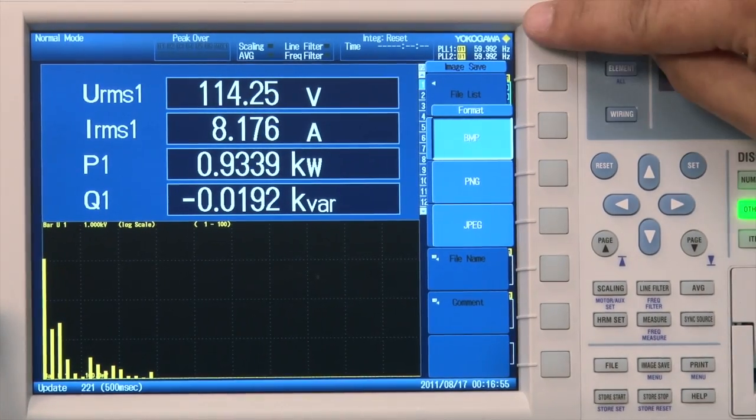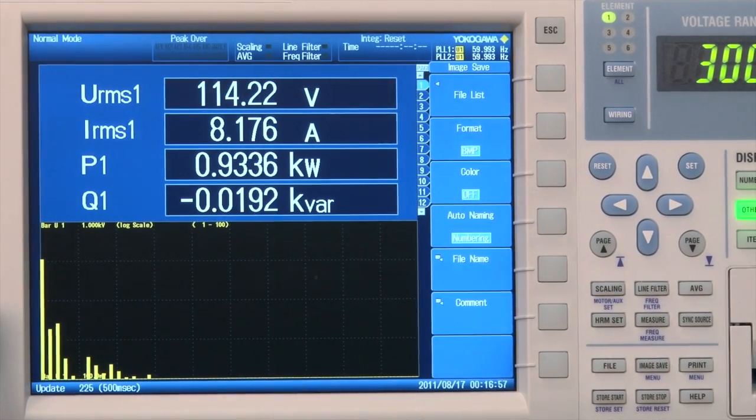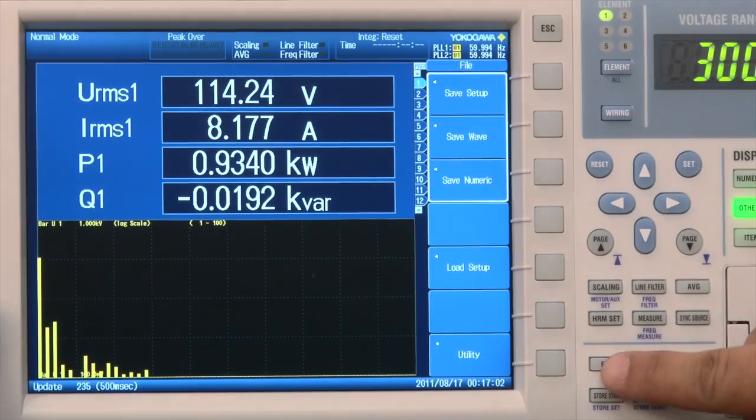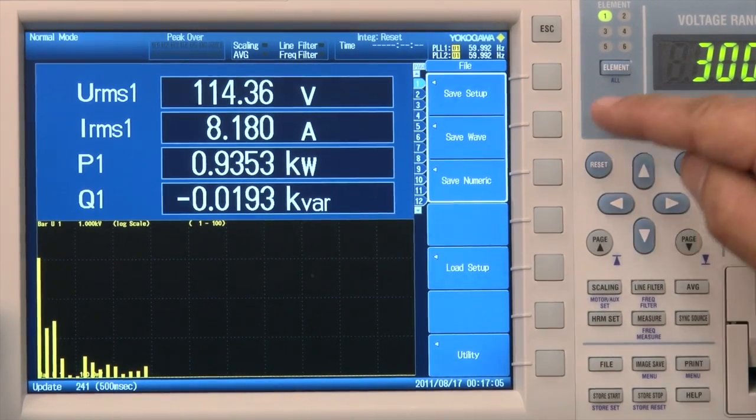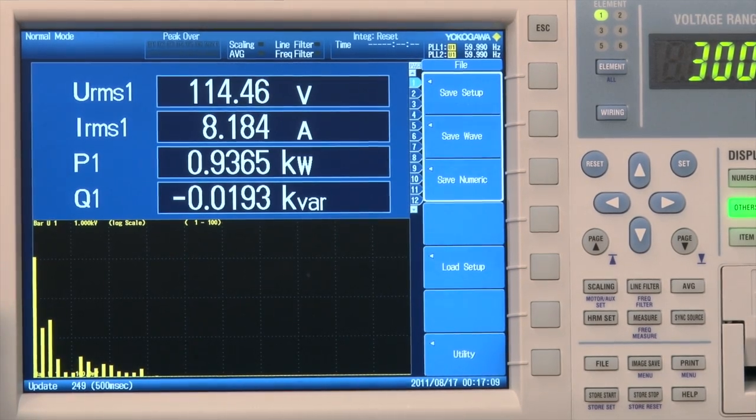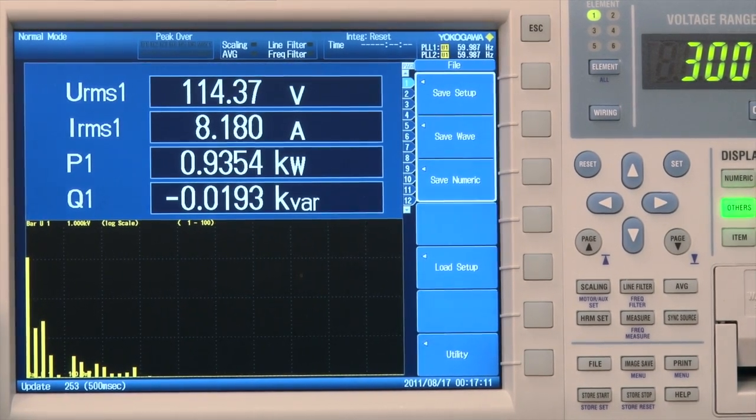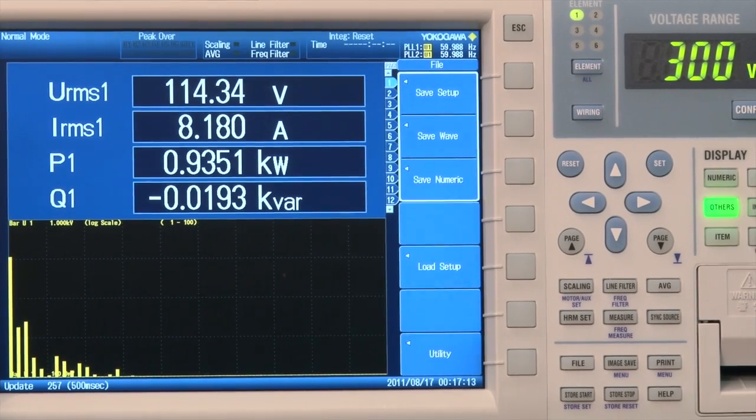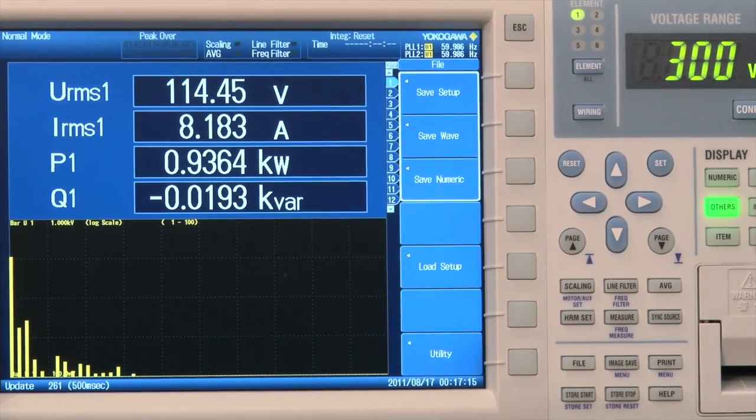If you wanted to take it a step further and save the actual data file itself, you can come here by pressing file, you can either save setup files, save the waveform, or numeric values. If you were to save a waveform you would then have to take that binary file and open it with some type of software, in which case we offer WTViewer.